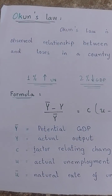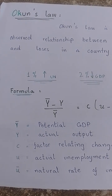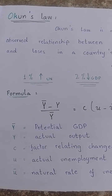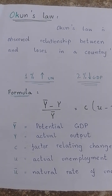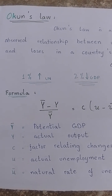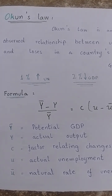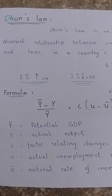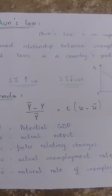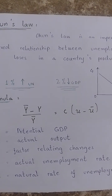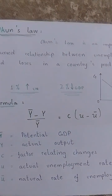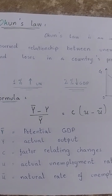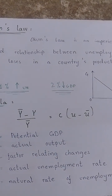The formula involves potential GDP and actual GDP, with a factor that captures the relationship between the actual unemployment rate and the natural rate of unemployment.